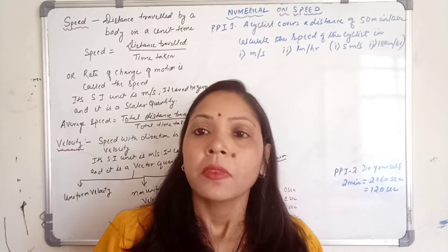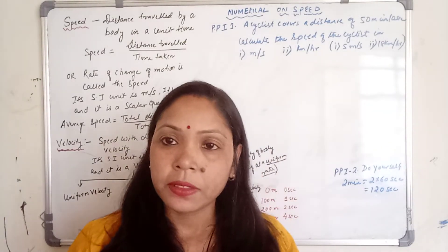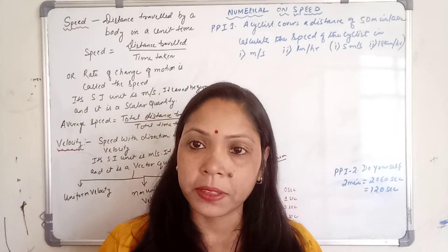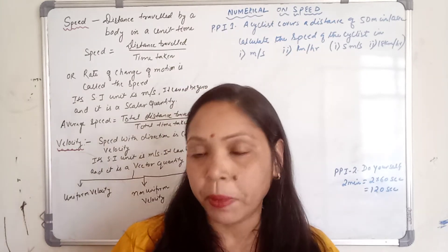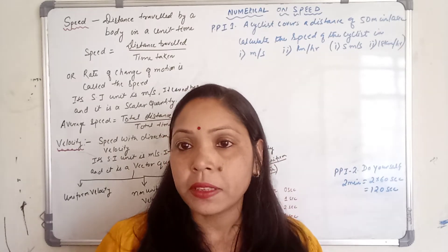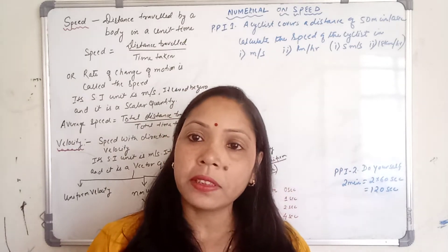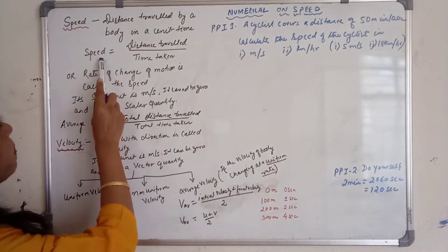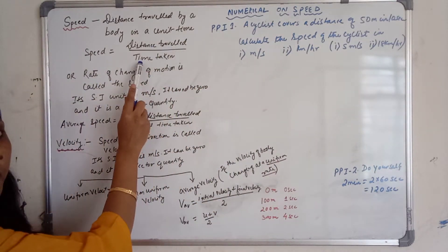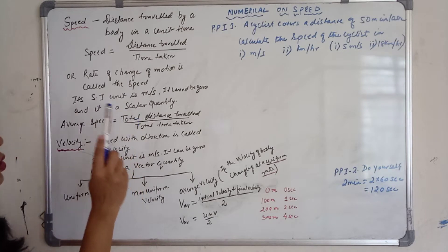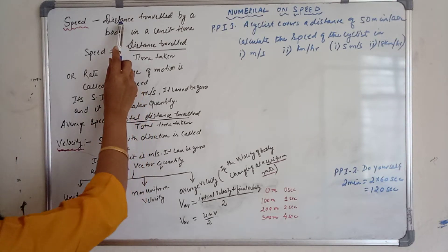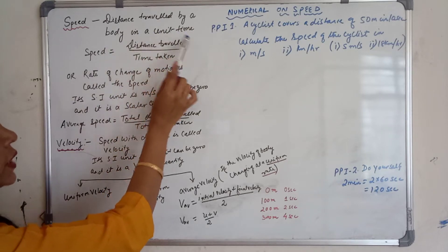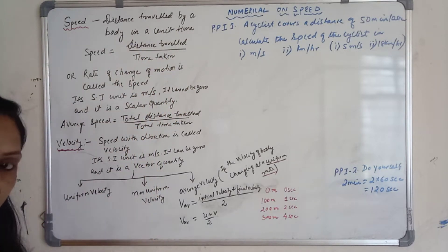Hello students, in today's physics class we are going to learn about speed and velocity. Now what is speed? Speed means it is a distance traveled per unit time. That is, speed is equal to distance traveled by time taken. In words, distance traveled by a body in a unit time is called speed.